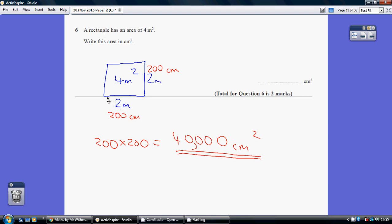So convert these lengths into centimetres. Well we know 2 metres is 200 centimetres because there are 100 centimetres in a metre. So how many centimetres squared, what would the area be if it's 200 by 200?